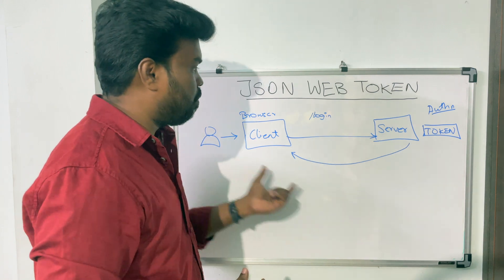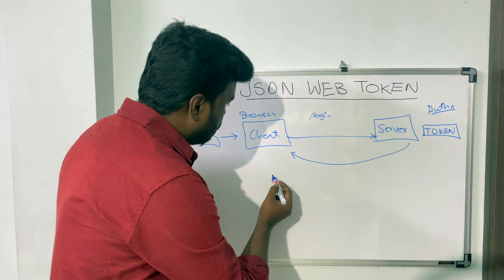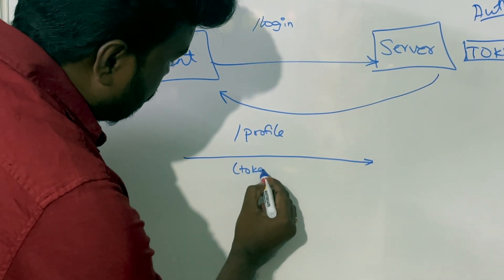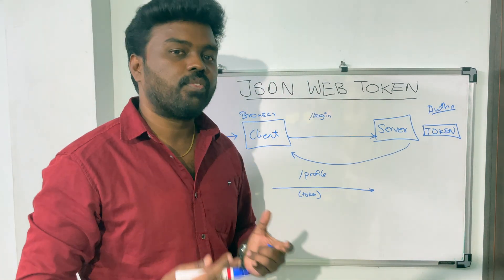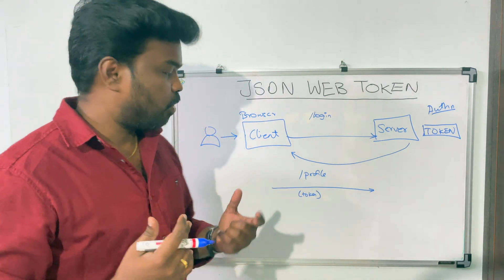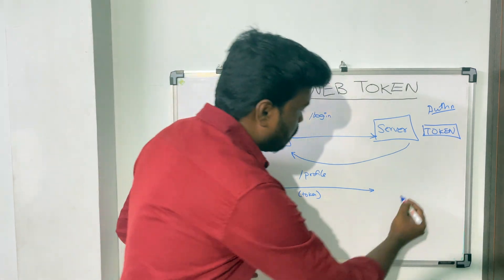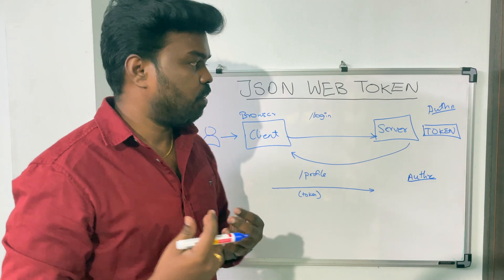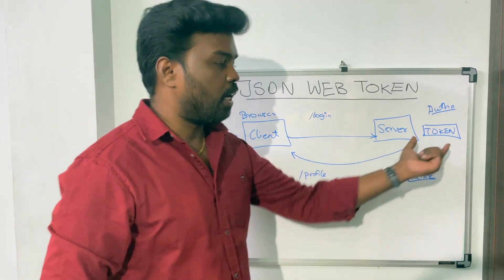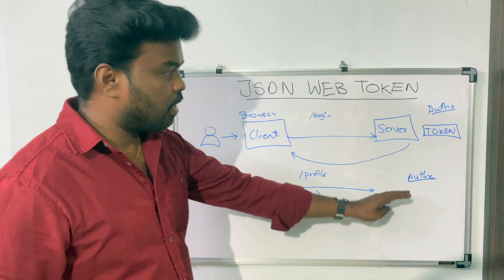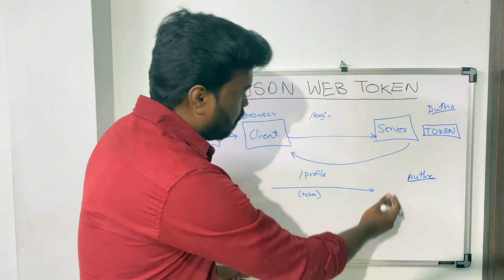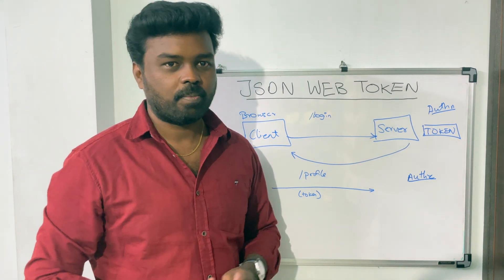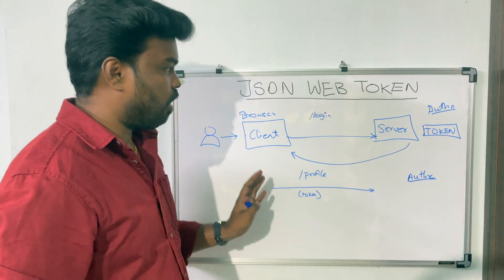Every time the client talks to the server, it passes the token along with the request. For example, if the client wants to access the profile page, it will pass the token along with the request. The server will check the token and verify if it has enough permission to access that endpoint — if it does, access is granted; otherwise access is denied. This process is what we call authorization. The token also contains information about the expiry period, and if the token is expired, the server will redirect the user to a login page to enter credentials and get a new token.